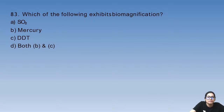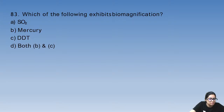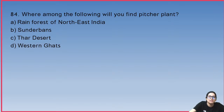Question 83: which of the following exhibits biomagnification? Mercury and DDT both exhibit biomagnification. The answer is both B and C.